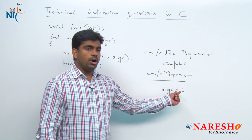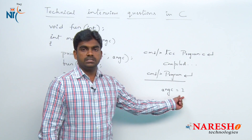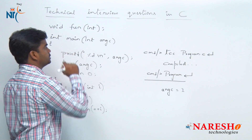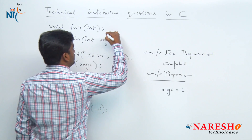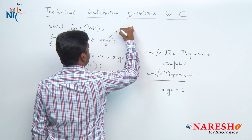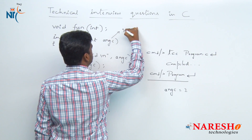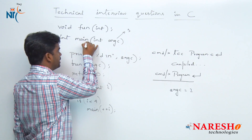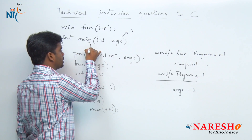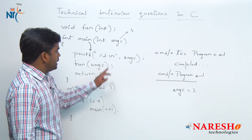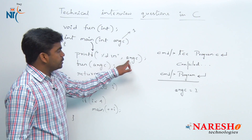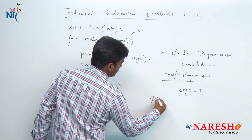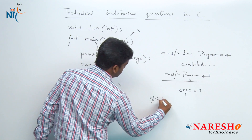Initially argument count is 1. Execution starts from the main function, and initially argument count is 1. The control moves inside and it will print the value of argc. So in the output it will print the value 1.